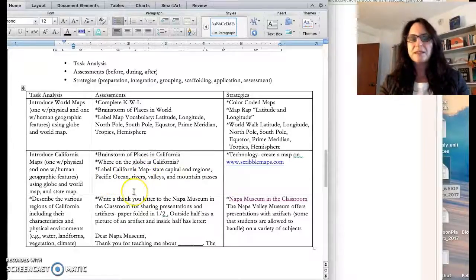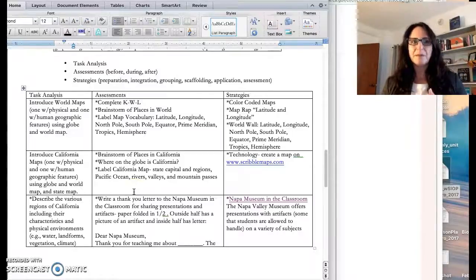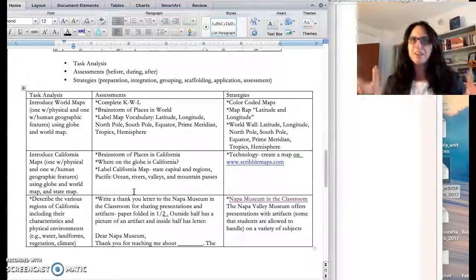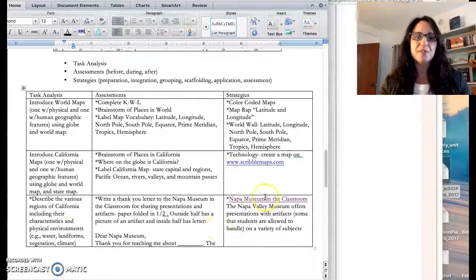For example, I started out with introducing the world map, then introducing the California map. Here I would talk about the regions, but I would also talk about the state capital because that's part of the standard as well. Then I would have them label the Pacific Ocean, some major rivers, valleys, mountain passes maybe.